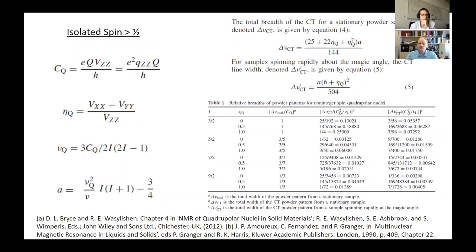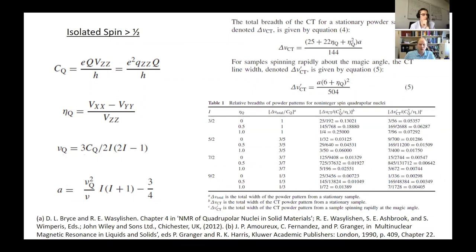For an isolated quadrupolar spin, the total breadth of the central transition is given by a simple formula that scales with the square of the quadrupolar frequency divided by the Larmor frequency. With magic angle spinning, you get a narrowing by a factor of about three to four depending on the asymmetry parameter. For higher spin quantum numbers you can actually measure much larger quadrupolar coupling constants because of the line-narrowing effect — for spin nine-halves, the line width is 0.00723 relative to 2.13 for spin three-halves. This is why you can measure very large quadrupolar coupling constants for cobalt-59, whereas for sodium-23 and chlorine-35, beyond a few megahertz MAS is no longer practical.